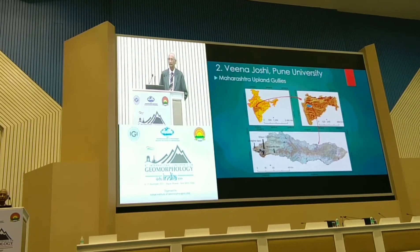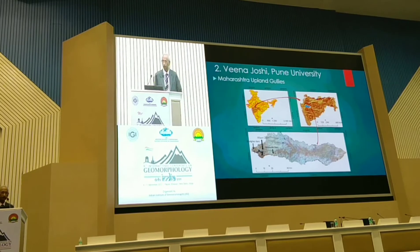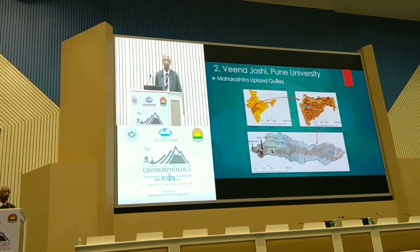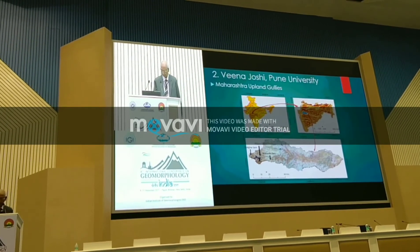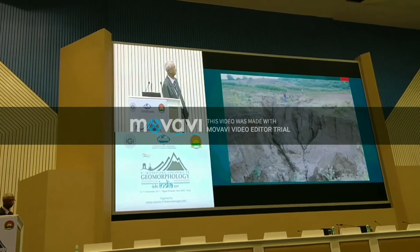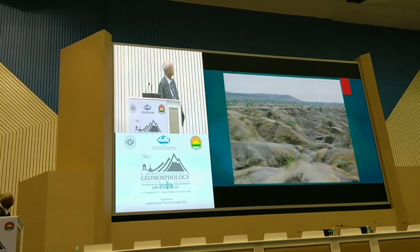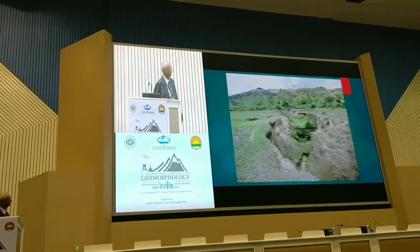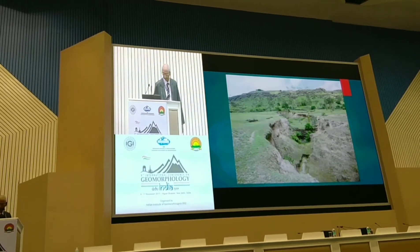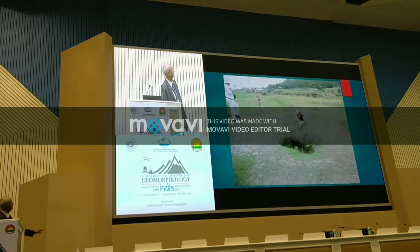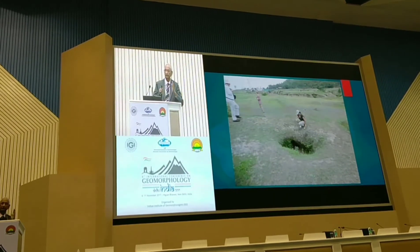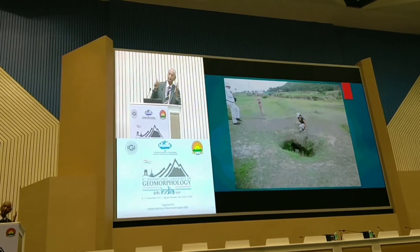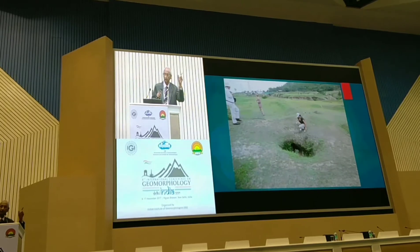Moving to the second study on Gully Development in Maharashtra, conducted by Professor Deena Joshi of Savitribai Phule Pune University. She selected two basins — one Ramayana area and one badland area in Maharashtra. The process of gully formation through tunneling and piping was already explained by Professor Yeltsi Sharma of Jackman University in 1968. Water sinks at the top and appears below — that is the piping system — leading to tunnel collapse and gully headcut formation.